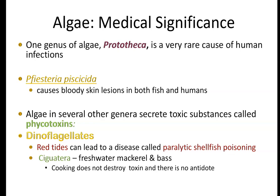There is something called Pfiesteria that — if you remember being on the eastern shore about eight to ten years ago — we had a huge outbreak. All the fish were coming up with bloody lesions. Because the watermen were handling the fish, they had lesions on their hands, and there were a lot of fish kills due to overgrowth of this algae. Algae can actually secrete toxins.